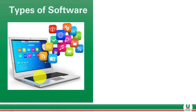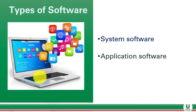Now let's quickly look at the types of computer software. Generally, we have two main types of computer software: system software and application software. In some literature you will see three types, but generally we have two main types — the system software and the application software.